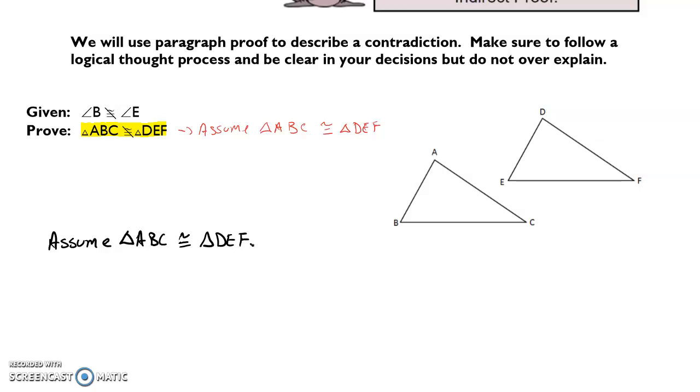Now I'm going to look up at my given information. I'm given that those two angles are not congruent. But I've just made this assumption. By this assumption, angle B and E are corresponding angles. They should be congruent. So because of this assumption, I can say, therefore, angle B is congruent to angle E by CPCTC. However, that contradicts directly a given statement.